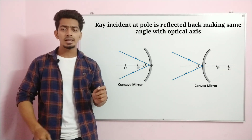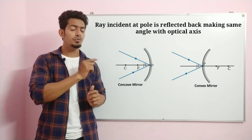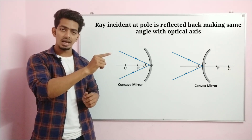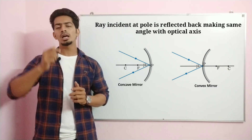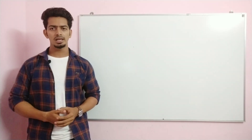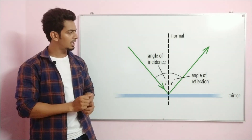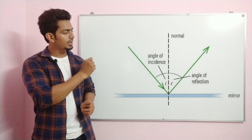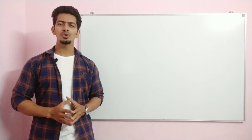Rule 4: if the incident ray passes through the pole, then it reflects at the same angle — meaning the angle of incidence equals the angle of reflection. This is the same as the basic law of reflection we see with a plane mirror: if there is a normal and a mirror, the angle of incidence will equal the angle of reflection.